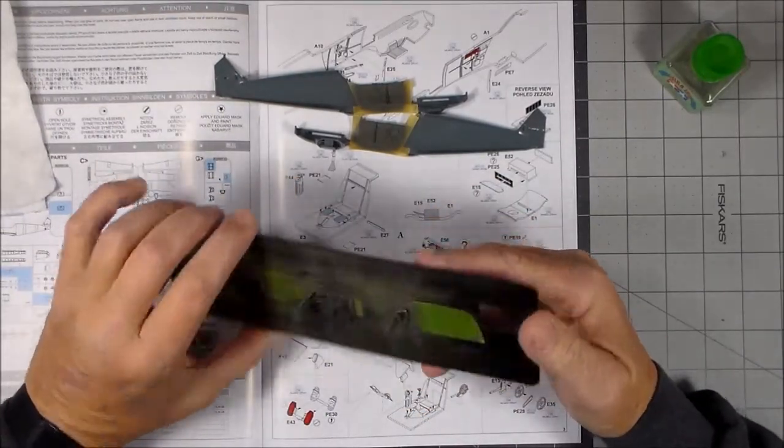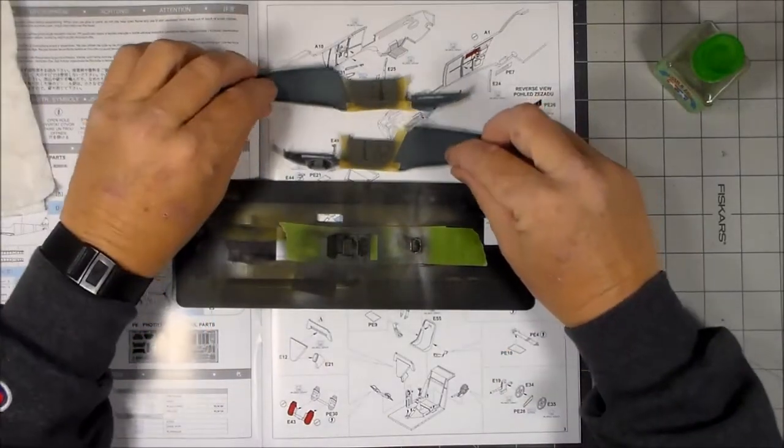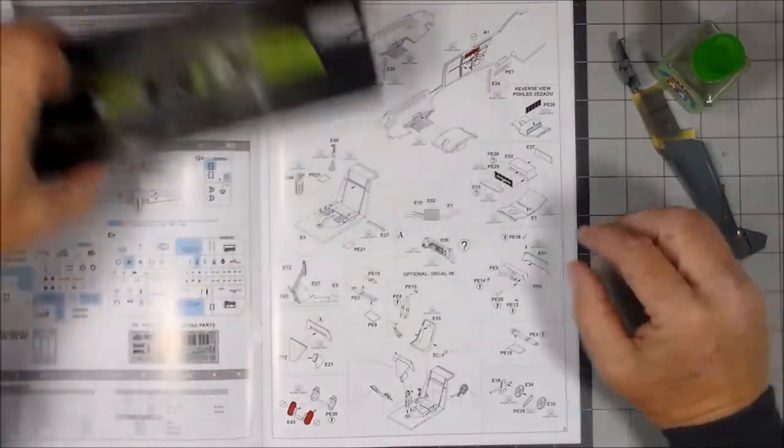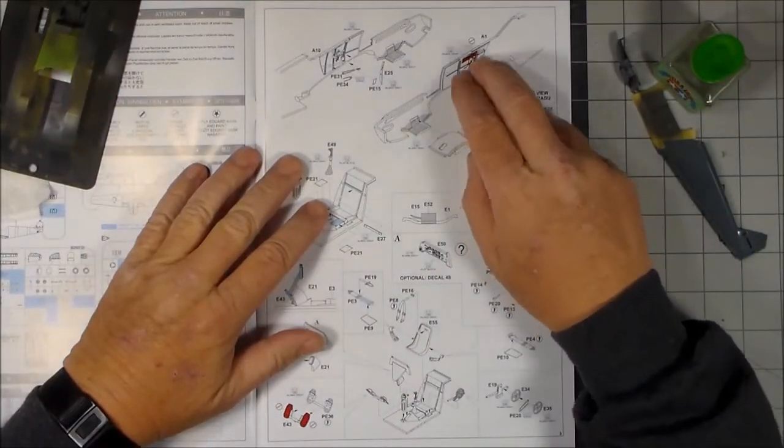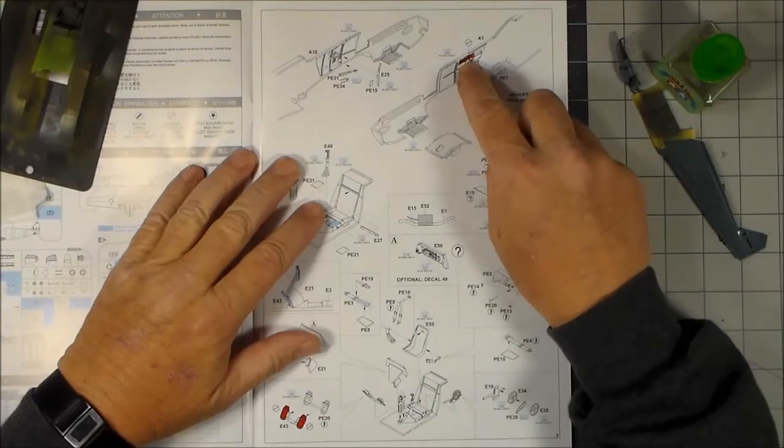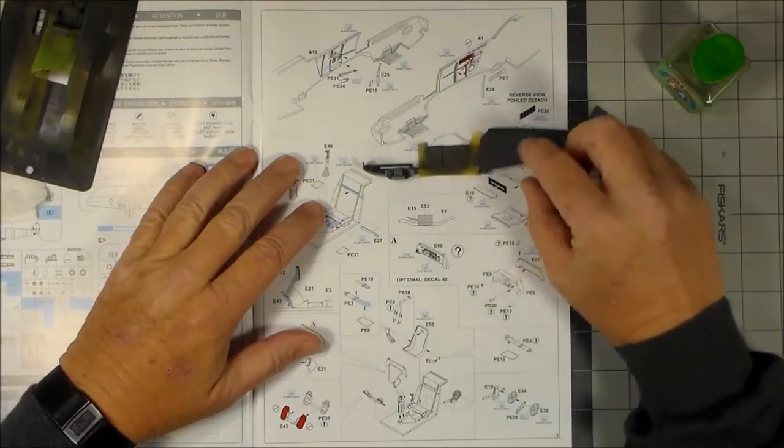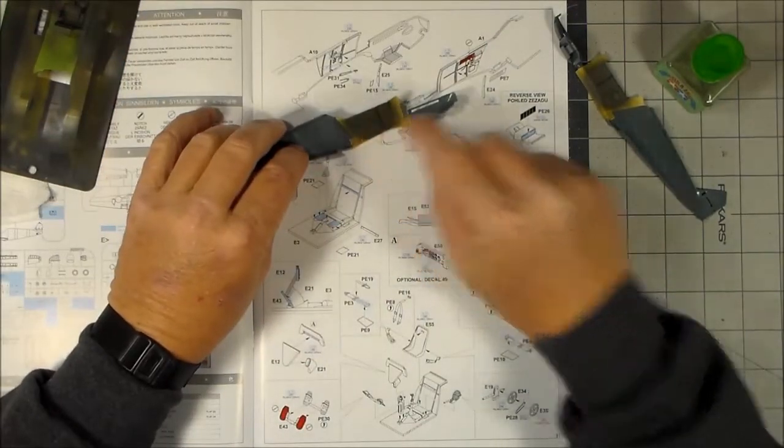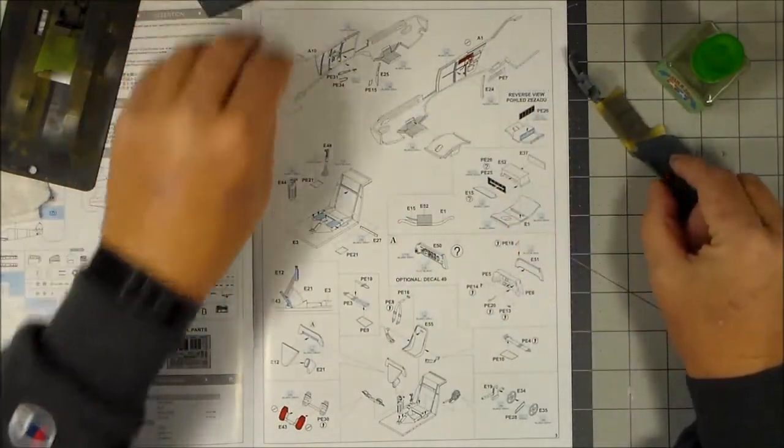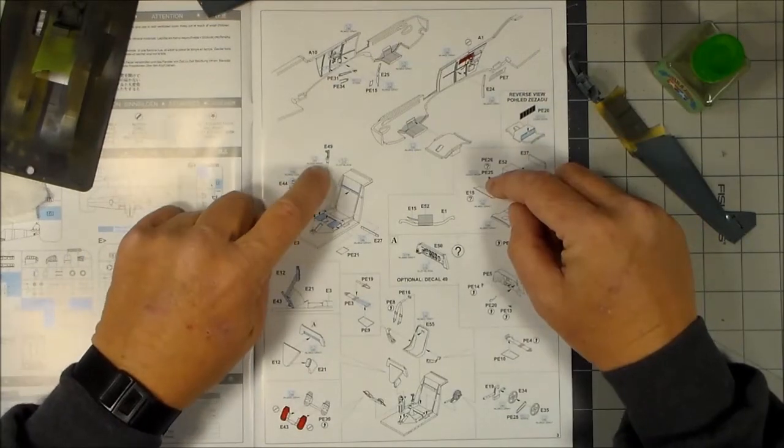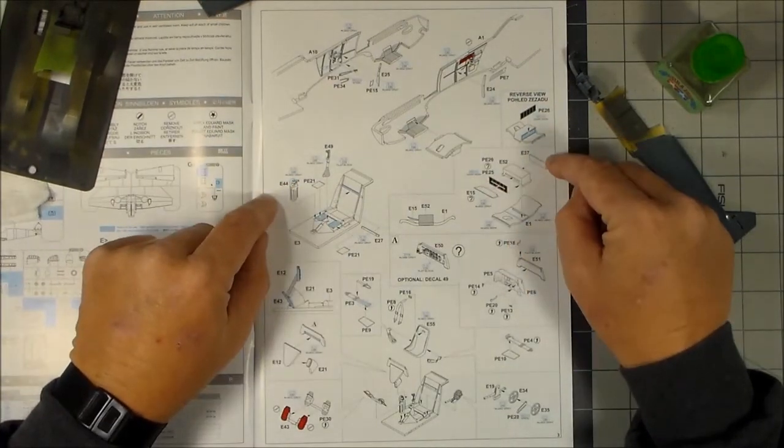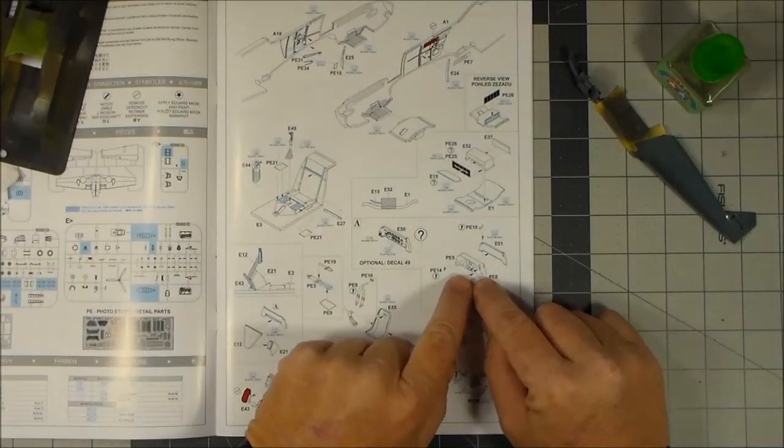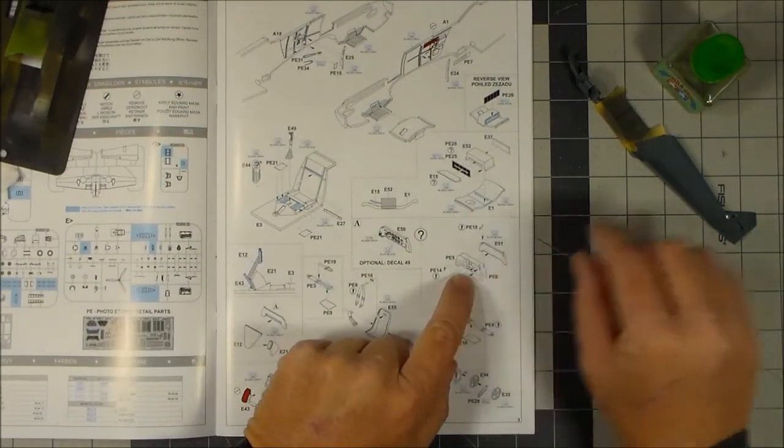Once it cured up a little bit I did some chipping on it using the hairspray method and it turned out pretty nice. I like it. So what I will do next is I will finish these parts up which is the photo etch part for the inside of the fuselage here.